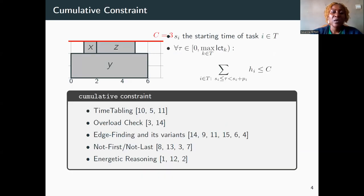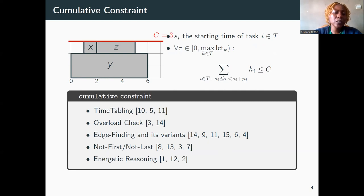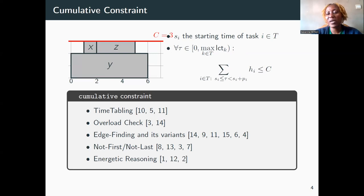It ensures a resource capacity is not violated at each time point. Let's consider this example where three tasks execute on a resource of capacity three. The starting times allocated to tasks X, Y, and Z enable them not to violate the resource capacity.